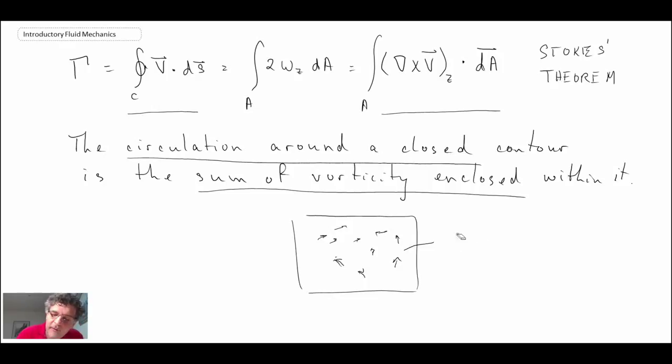And it'll be two times the rotational rate. So I'll put it as the vorticity in the z direction. And that would then give you an inference as to the circulation in the flow.